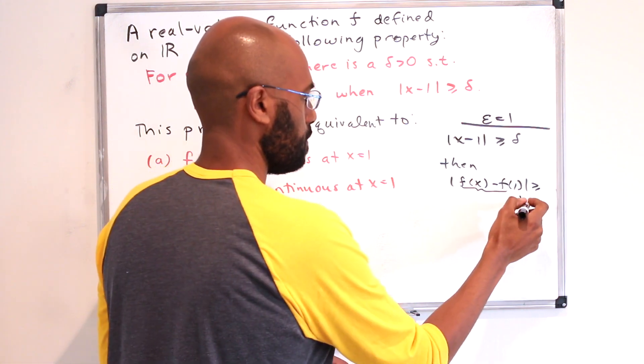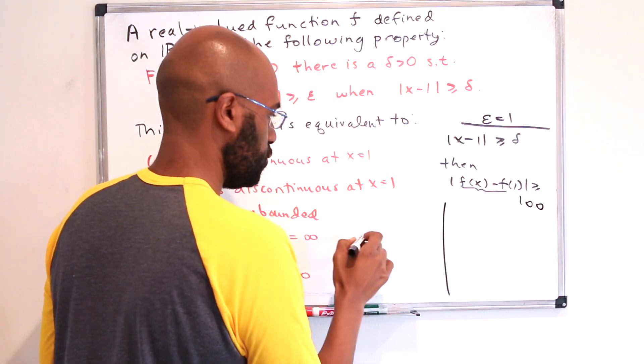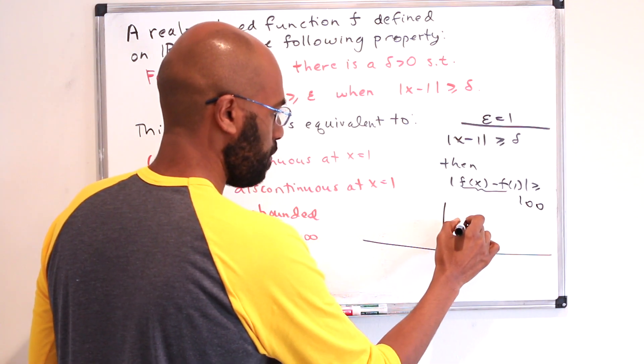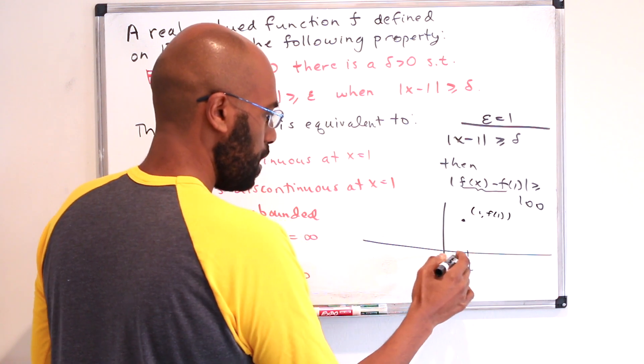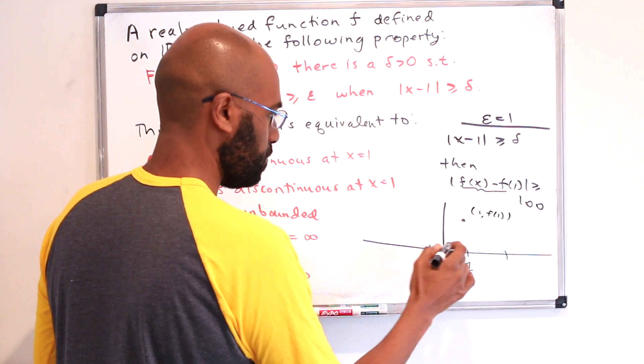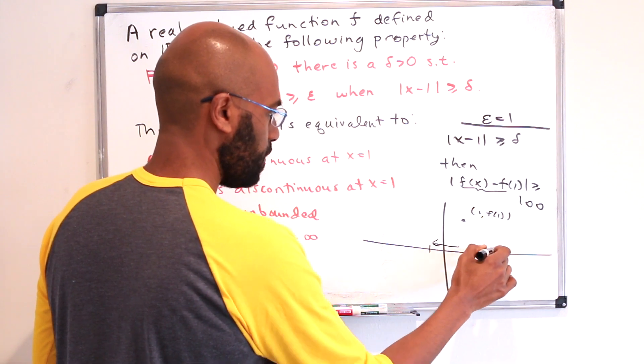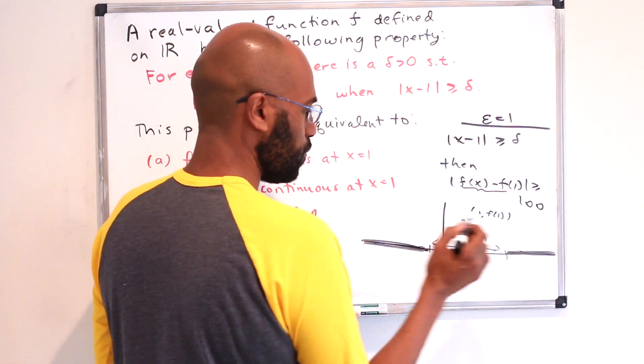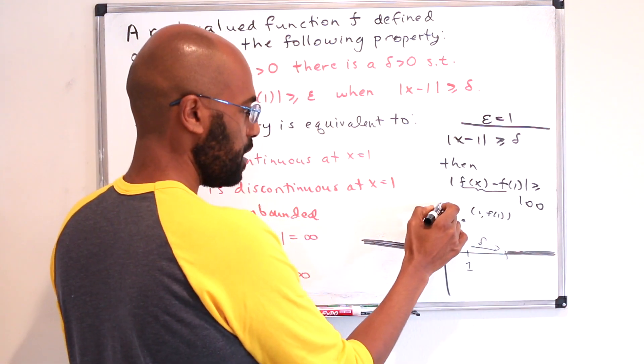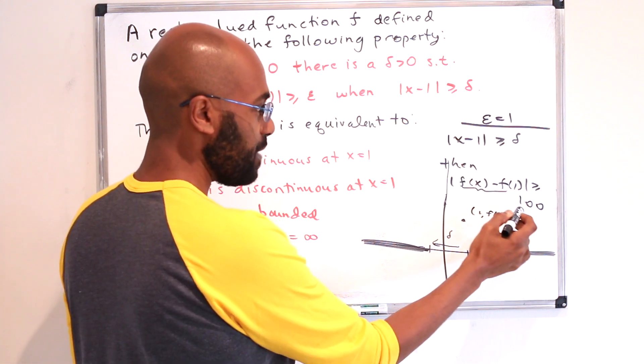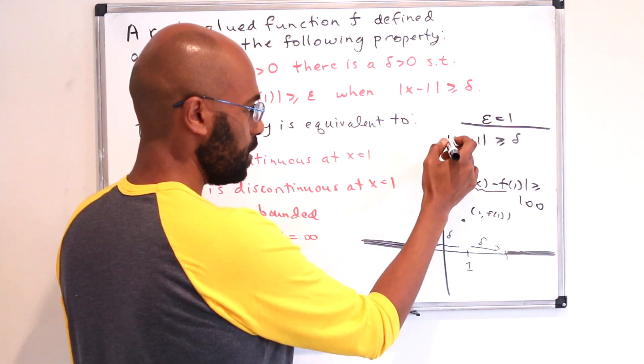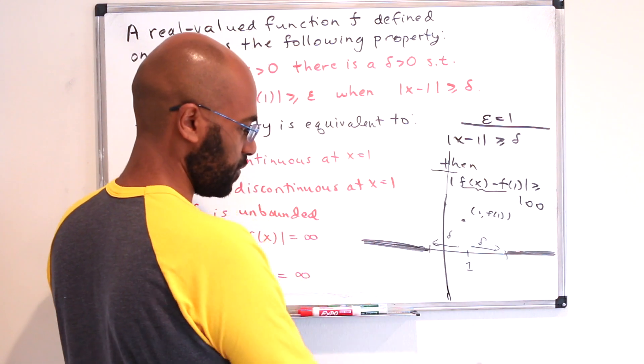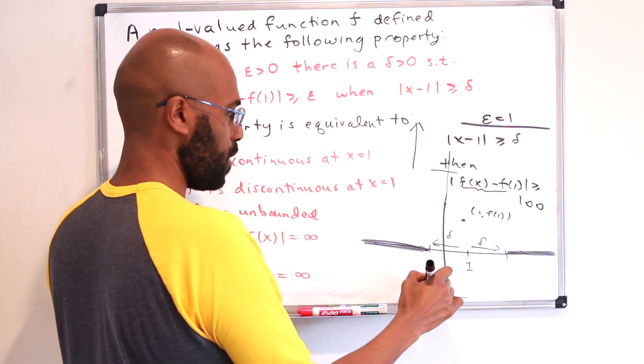So what we're saying is, if we drew this graph again, here is our value 1, again our point 1, f of 1. So maybe our delta would be something like this, so we're saying when x is outside of this interval right over here, then f is very far away from f of 1. So f might be like somewhere, I can't even draw it, it's off the charts right over here. It's going to be either way up here or way down here.